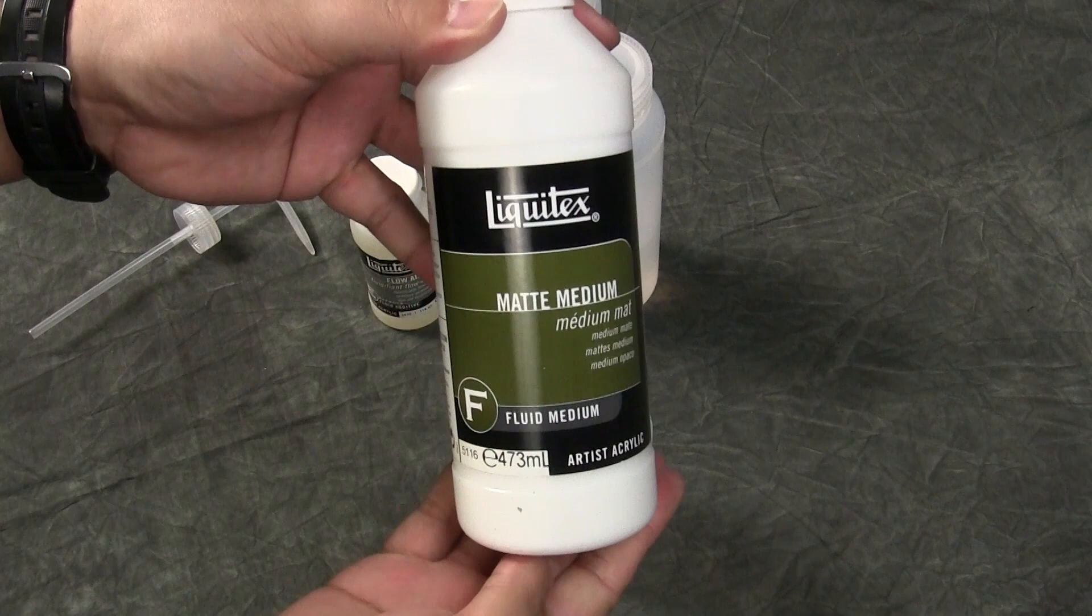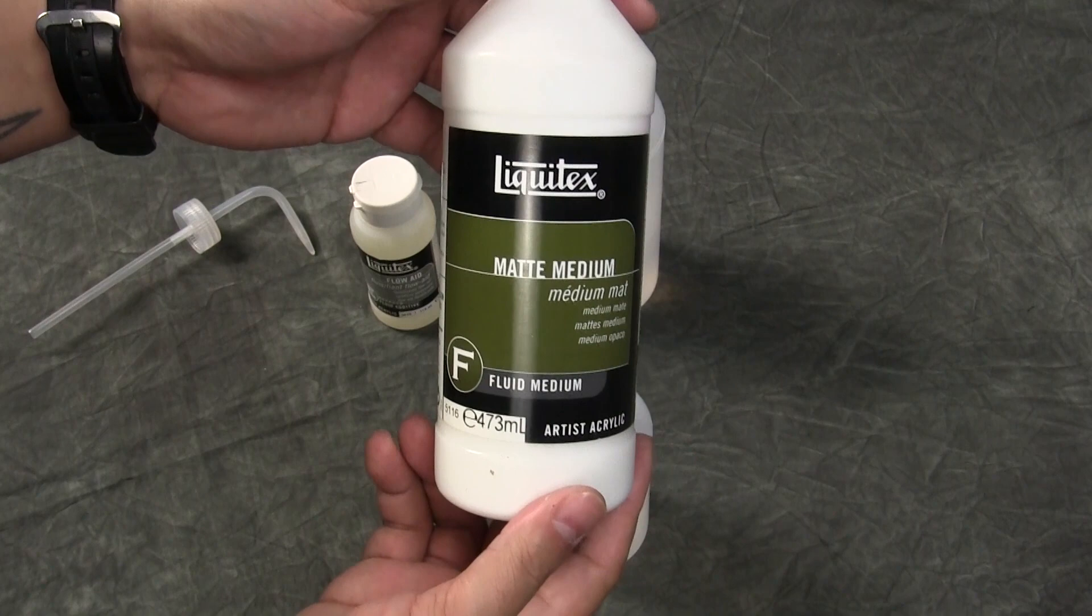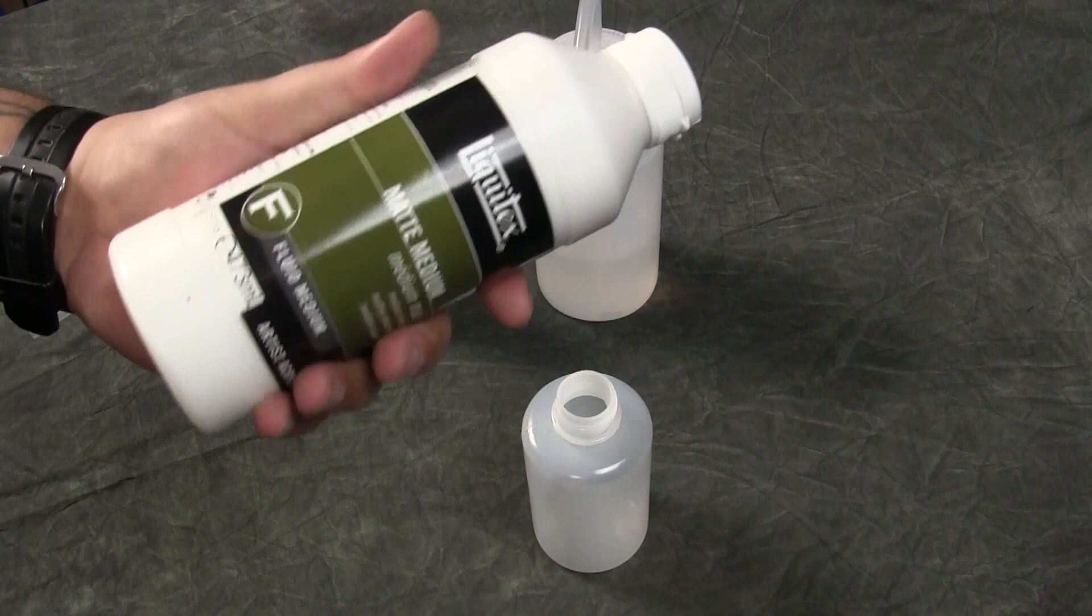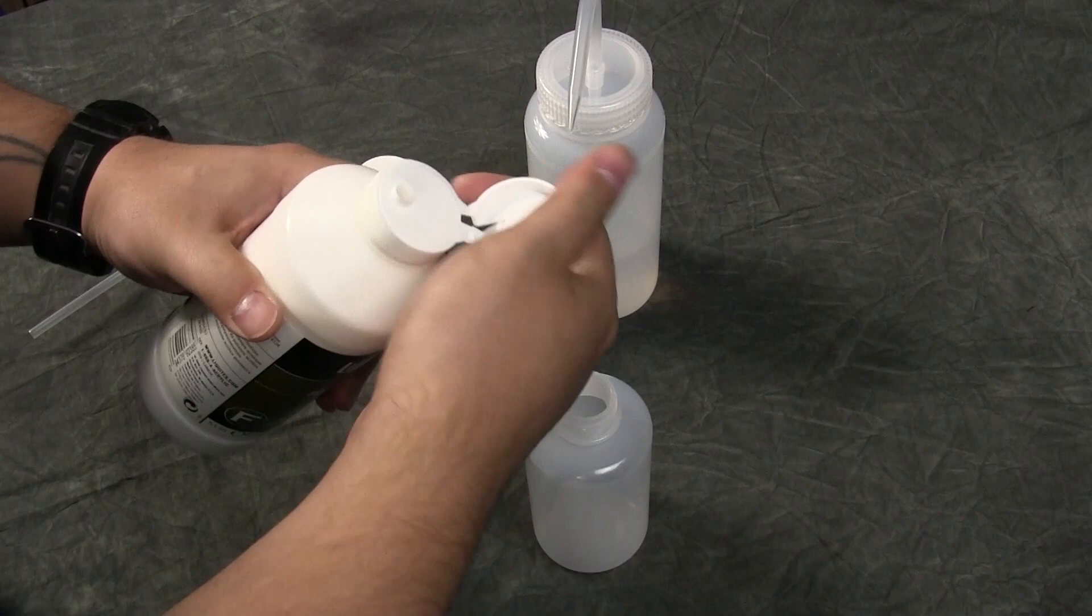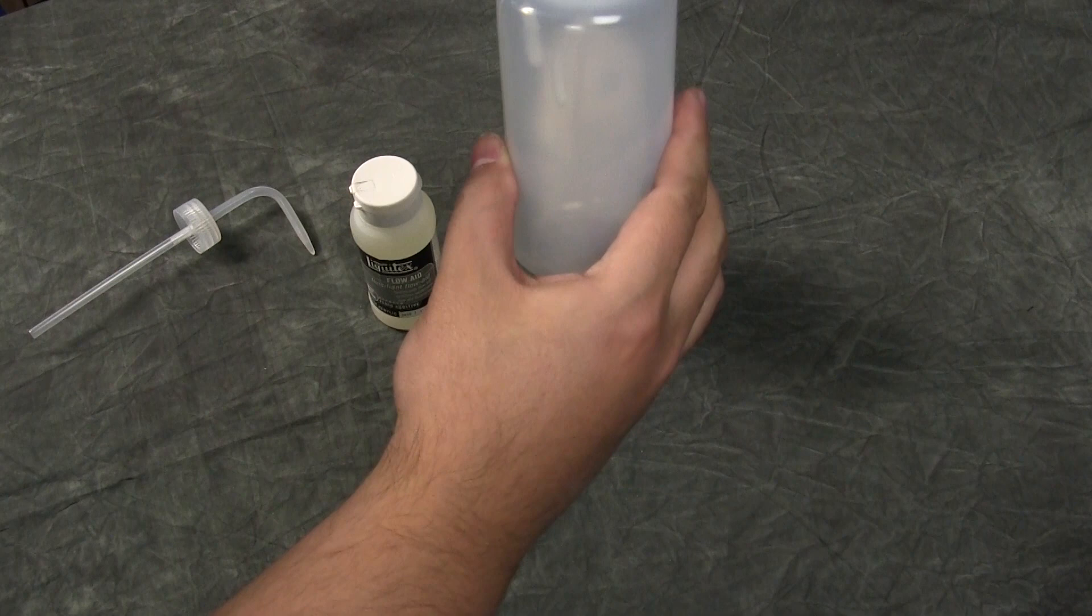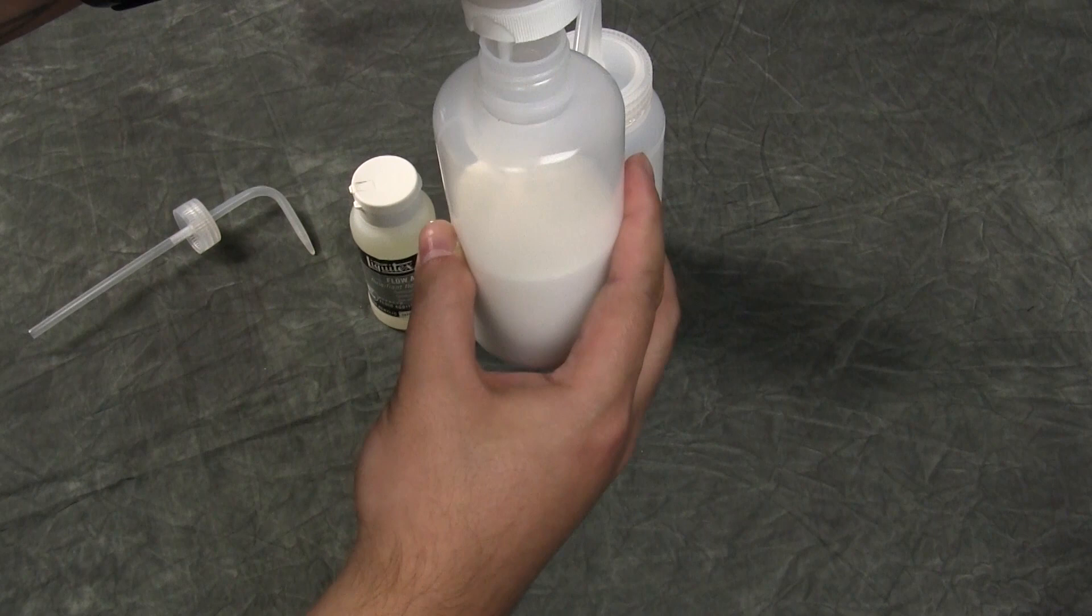So here we go, Liquitex matte medium, just a straight up one, not the ultra matte medium, which is another brand they have, or another type of matte medium. This is just regular old matte medium that you can pick up at Michael's, and we fill up three quarters of the way. It's not exact, we're just kind of eyeballing it.